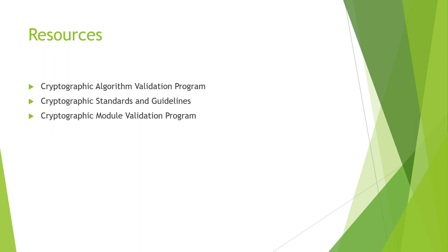The next resource is Cryptographic Standards and Guidelines, which includes primitives, algorithms, schemes, and other material described through all of the NIST and FIPS documents. It's essentially a document library with very important and useful information.